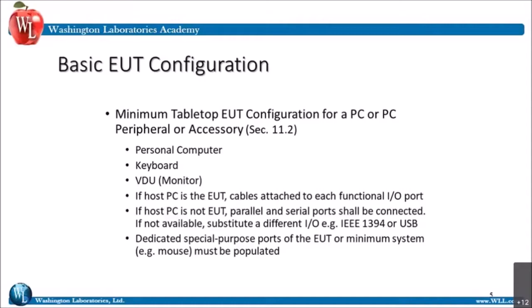A question came in: do all the ports need to be cabled to a device? The standard says it prefers you cable to a device — if you're cabling a USB cable out, they want a USB type of device at the end of that cable. However, if they're not all available, you are able to simulate that by terminating the cable at the characteristic impedance. You can also simulate it by doing a loopback — looping a transmit port to a receive port automatically puts it back to characteristic impedance. As long as you can simulate the impedance properly, you don't have to have a device on the end of that cable.